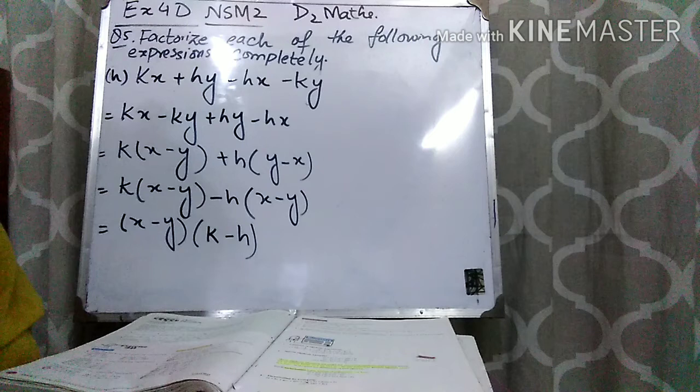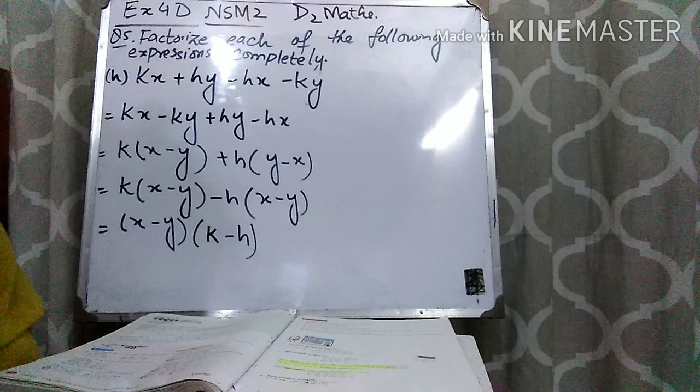Here you can see that x minus y is now present in both terms, so you can take x minus y common. What's left in the first term is k, and what's left in the second term is h. So the answer is (x minus y)(k minus h). I hope today's lecture is clear to you. Take very good care of yourself. Thank you very much.